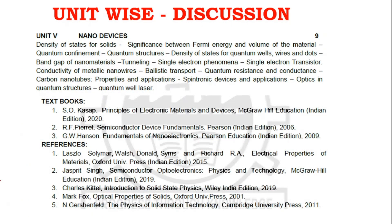In Unit 5, there are many important questions. Quantum confinement and quantum structure is a very important question. Single electron phenomena and single electron transistor is also very important. Carbon nanotubes is a very important question as well. For spintronic devices, just go through the topic.